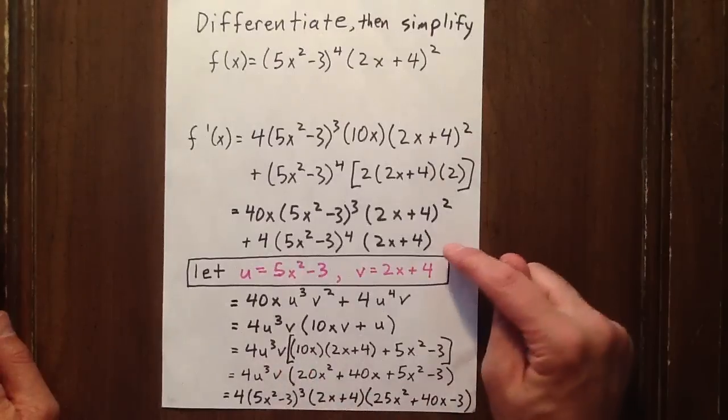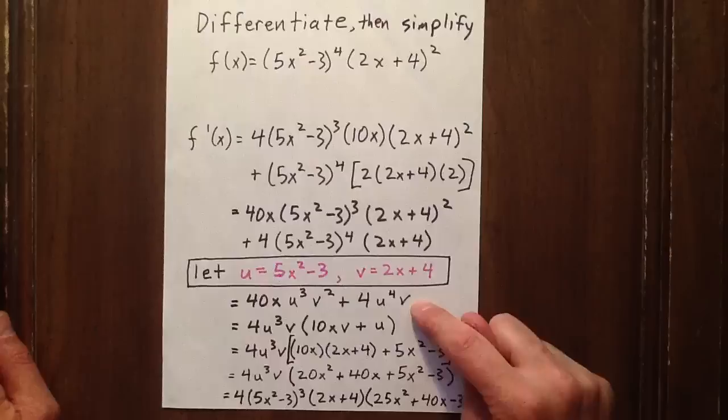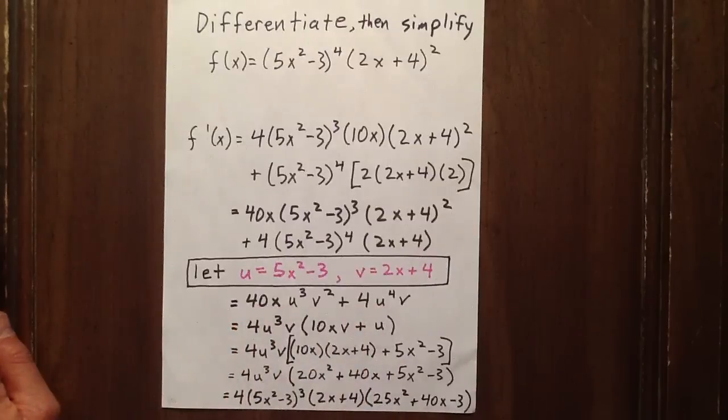The second part can be expressed as 4u to the 4th v. And now we have a simpler looking polynomial.